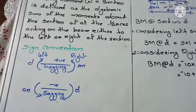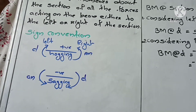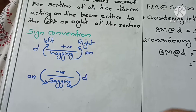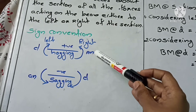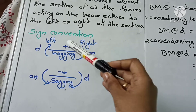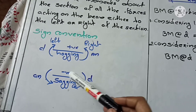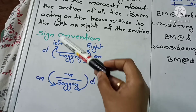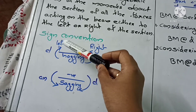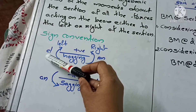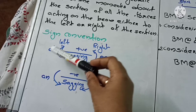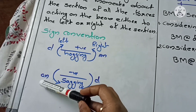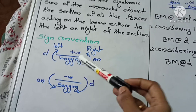Sign convention: When we consider the right side of a section, anticlockwise moments are taken as positive and clockwise moments are taken as negative. When we consider the left side of the section, clockwise moments are taken as positive and anticlockwise moments are taken as negative.